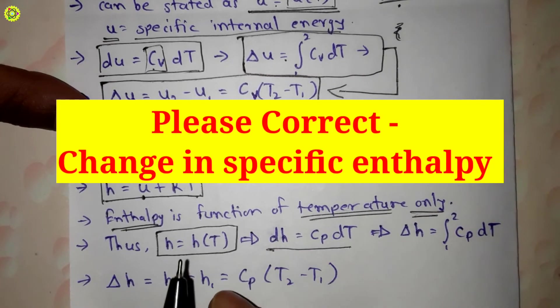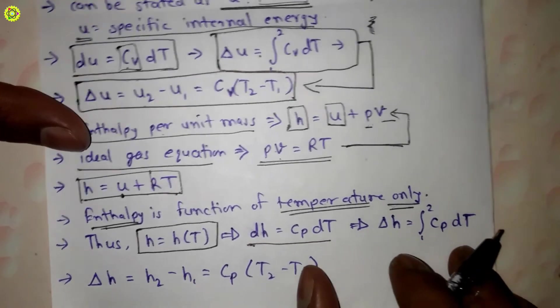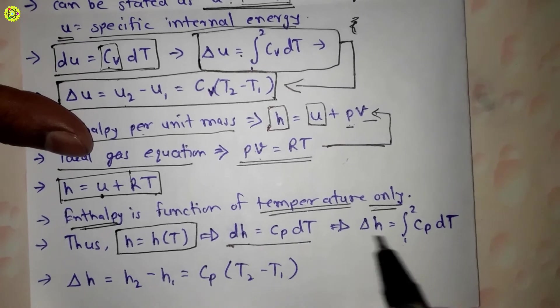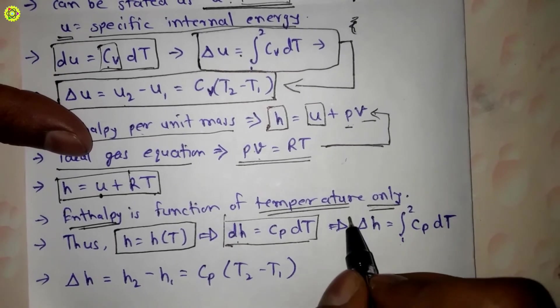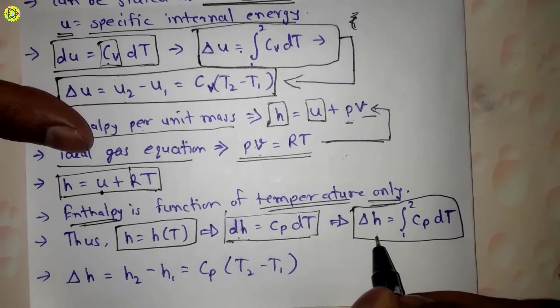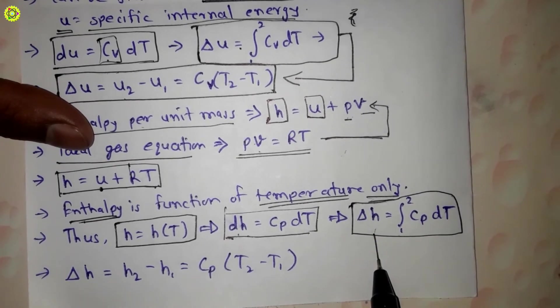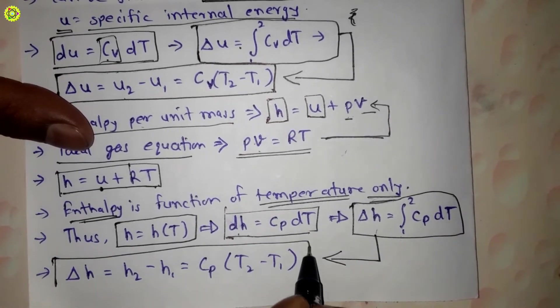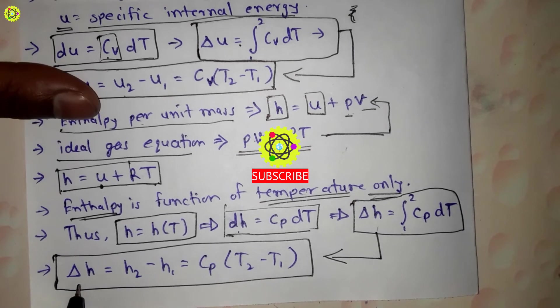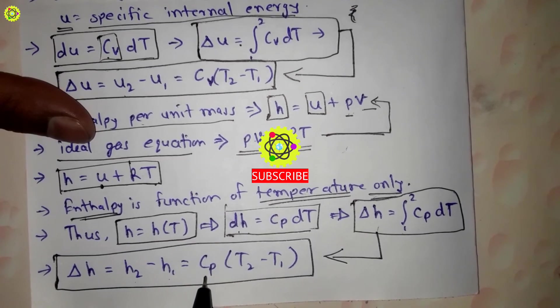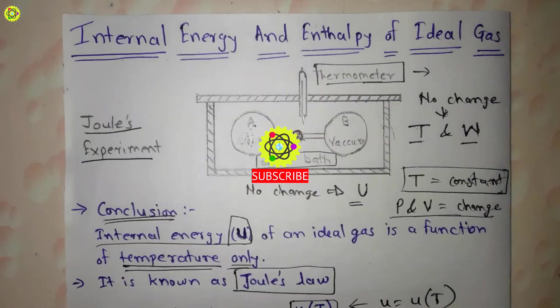Now suppose there is a change in enthalpy of an ideal gas from state 1 to state 2. After integrating dh = cp·dT from 1 to 2, we get delta h equal to the integral from 1 to 2 of cp·dT. After integrating, we get delta h, that is the change in specific enthalpy, equal to h2 minus h1, which equals cp multiplied by (T2 minus T1), where cp is the specific heat at constant pressure.